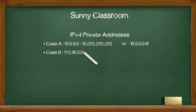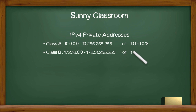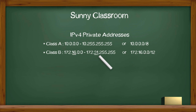Class B: 172.16.0.0 to 172.31.255.255, or 172.16.0.0/12. This one is not easy to remember, especially the second octet range, 16 to 31. This reminds me of a song in the Hollywood movie The Sound of Music: "You are 16, going on 17, baby, it's time to think." But here, you would sing: "You are 16, going on 31, baby, it's very crazy."